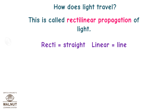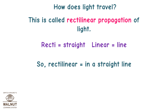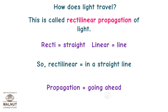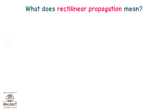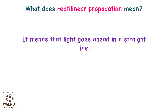This is called rectilinear propagation of light. 'Recti' means straight, 'linear' means line, so 'rectilinear' means in a straight line. 'Propagation' means going ahead. So rectilinear propagation means that light goes ahead in a straight line. That is how light travels.